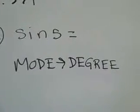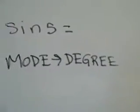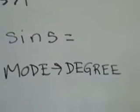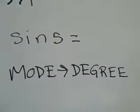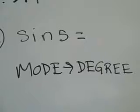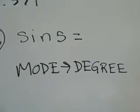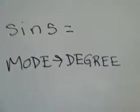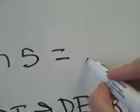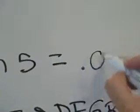To find the sine of 5, you're going to find the sine key on your calculator, hit it, and then enter 5. You're going to enter it exactly how it looks. If you do this correctly, you should get .087.